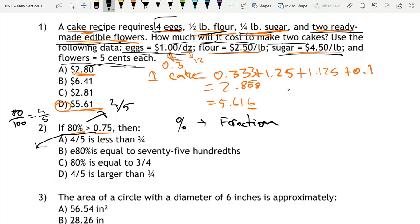And now 0.75 as a fraction. 0.75 is 75 over 100, which we can simplify in lowest terms to 3 over 4, because we can divide by 25 from the top and from the bottom. So now we have 80% equals 4 over 5, and 0.75 equals 3 over 4.